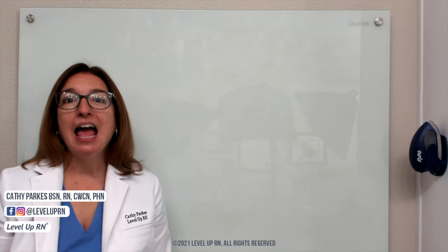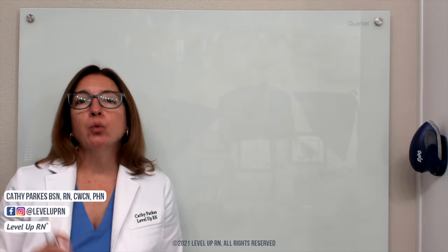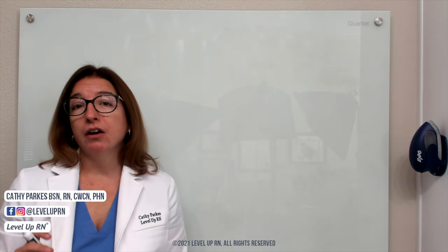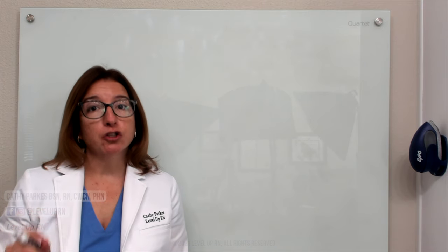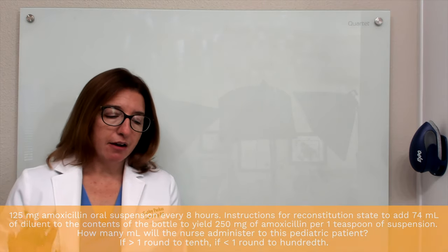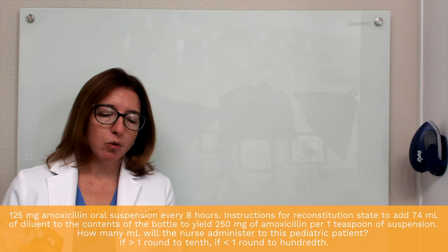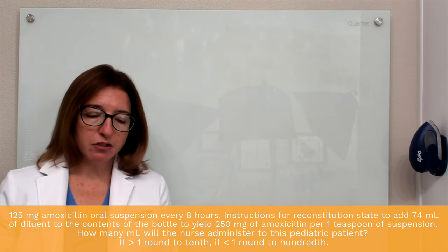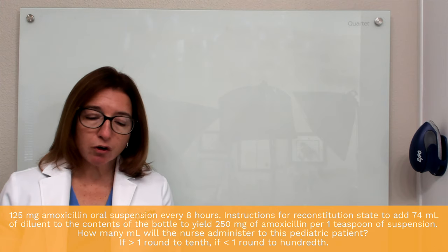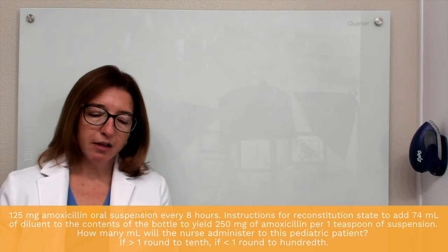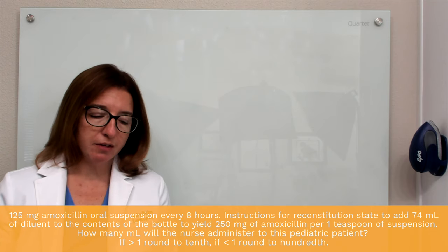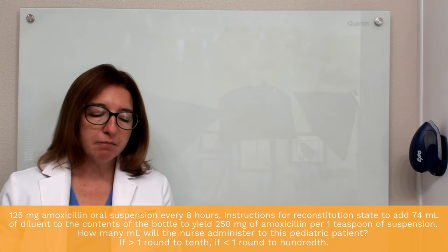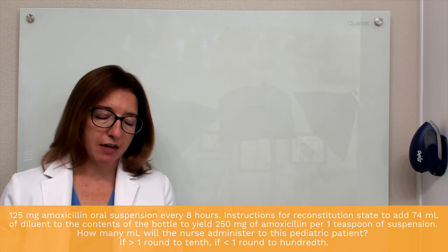Hi, I'm Kathy with Level Up RN. As promised, I am going to work through a reconstitution problem that was submitted by a viewer on YouTube — it is listed here on the screen. The order states that 125 milligrams of amoxicillin is ordered for administration every eight hours. Instructions for reconstitution state to add 74 milliliters of water to the contents of the bottle to yield 250 milligrams of amoxicillin per one teaspoon of suspension. How many milliliters will the nurse administer to this pediatric patient?